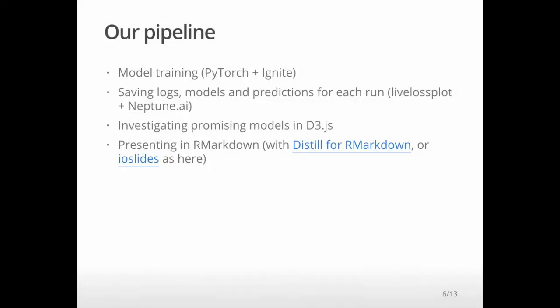Let me talk about the pipeline. We're using PyTorch, in this case plus Ignite. We save models with LiveLossPlot plus Neptune and all metrics. But also, out of the feature maps, we create some visualizations using D3. And as you see, right now I present them in a slide. When you write things, even for internal notes, we use Distill or R Markdown.